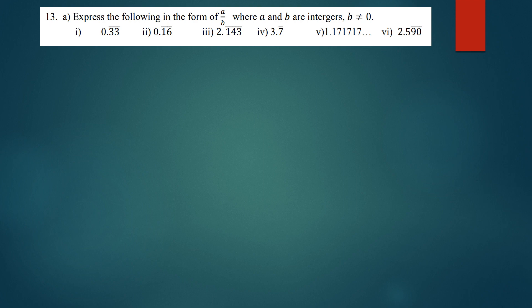In this tutorial we are going to discuss how to express repeating decimal numbers as fractions. The question says: express the following in the form a over b, where a and b are integers.